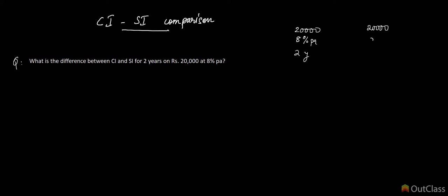Rs. 20,000 at 8% per annum compounded annually for two years. So this is CI and this is SI. They're asking you to find the total CI and the total SI and take the difference between these two quantities.